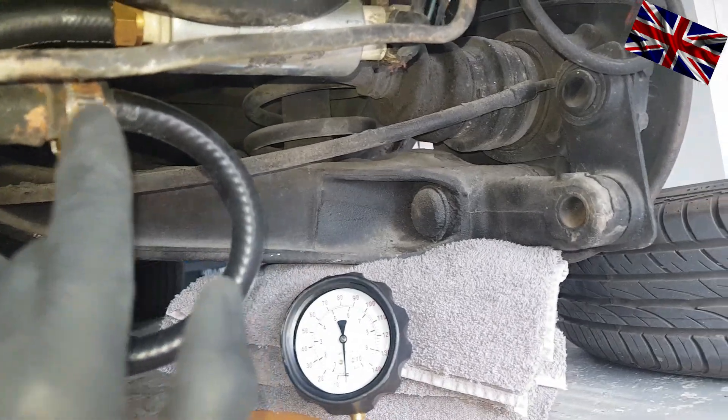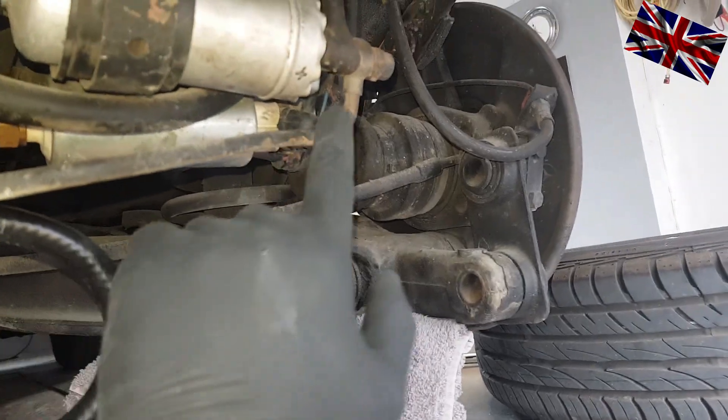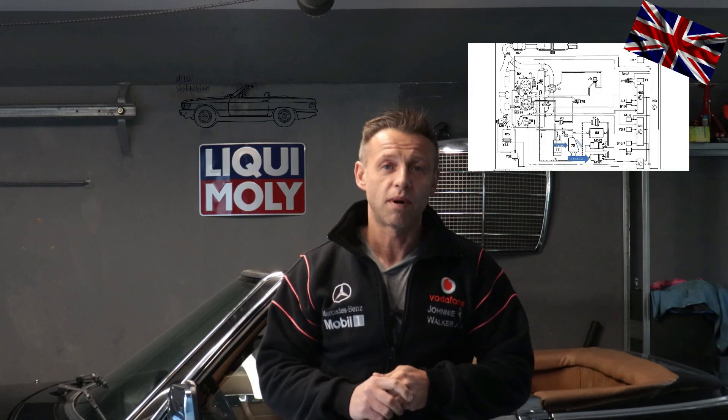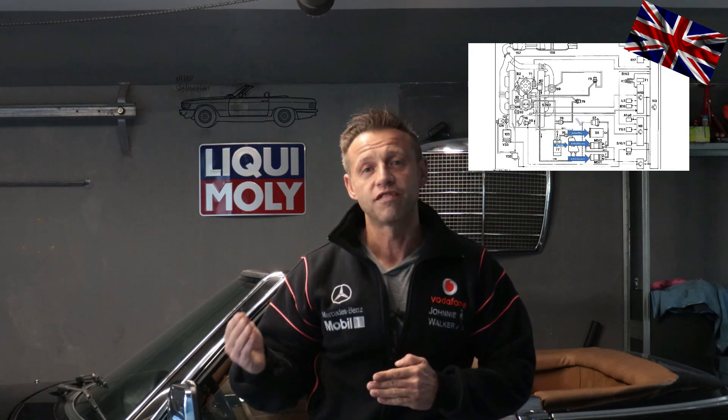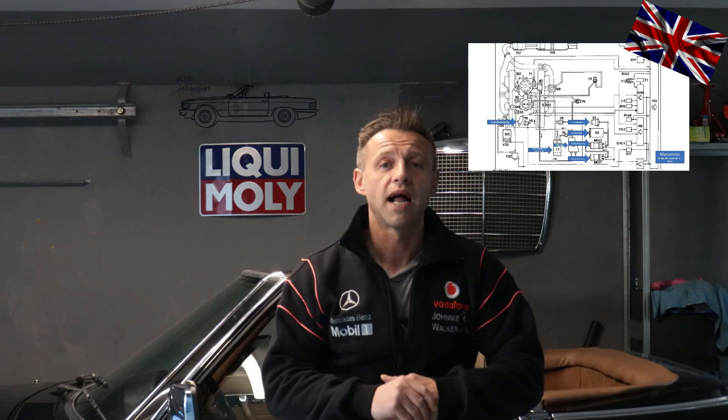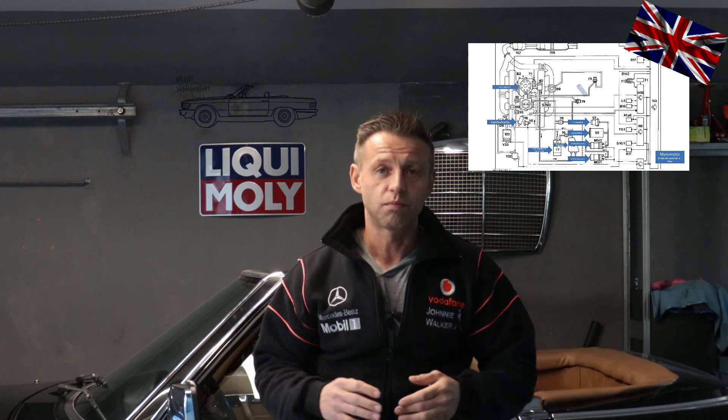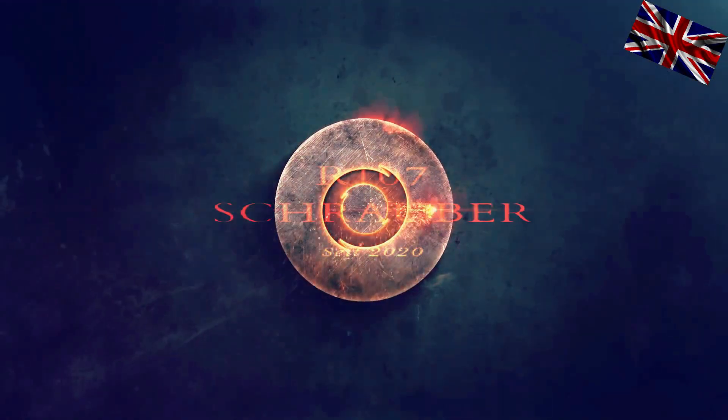In a previous video, we checked the fuel pressure between pump one and pump two to see which pump was not working. Related to this, in another chapter of this Ki-Jetronic series, we measured the fuel pressure at the intake port of the upper chamber of the fuel divider. Several drop-down tables will be shown during this video for your orientation. Let's start right after the introduction.